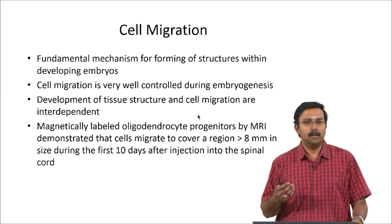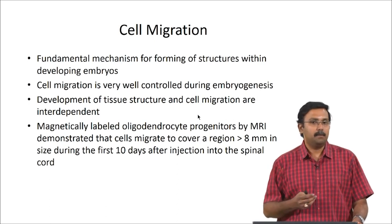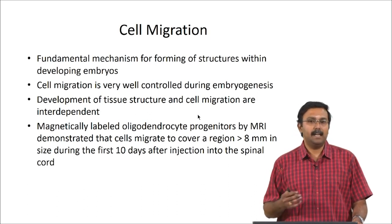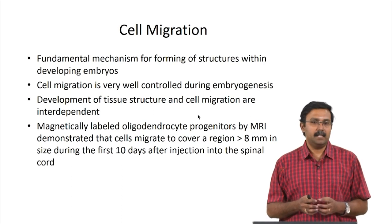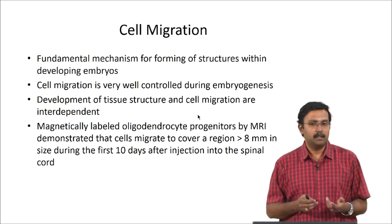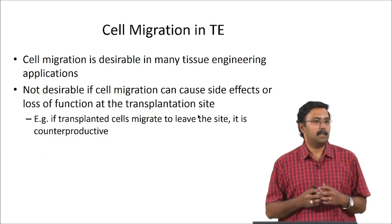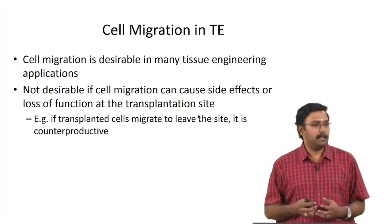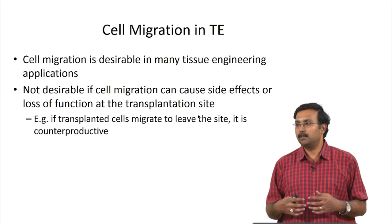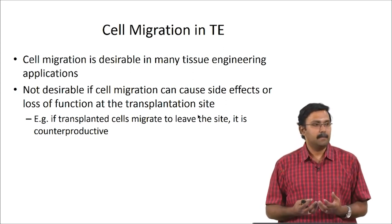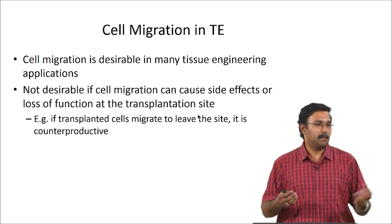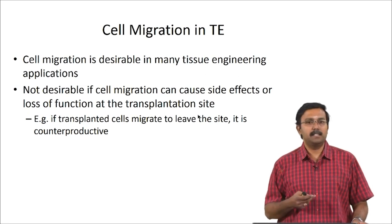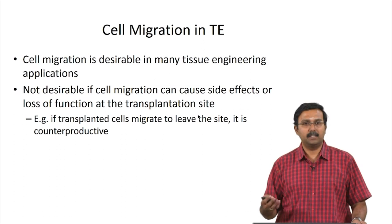People have used magnetically labeled oligodendrocyte progenitors and monitored them using MRI to show that the cells can actually cover a region of greater than 8 millimeters in size during the first 10 days when injected into a spinal cord. In tissue engineering applications, cell migration can be very important because host cells can come to the tissue construct and integrate nicely with the cells. Also in angiogenesis, cell migration is required for vascularization to happen.